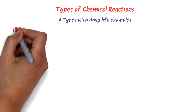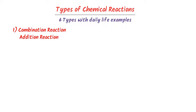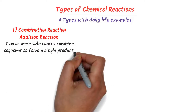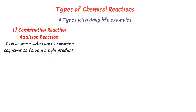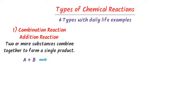The first type is combination reaction or addition reaction. In combination reaction, two or more substances combine together to form a single product. Like A plus B combine together to form AB product. For example, carbon plus oxygen gas would combine together to form carbon dioxide gas.